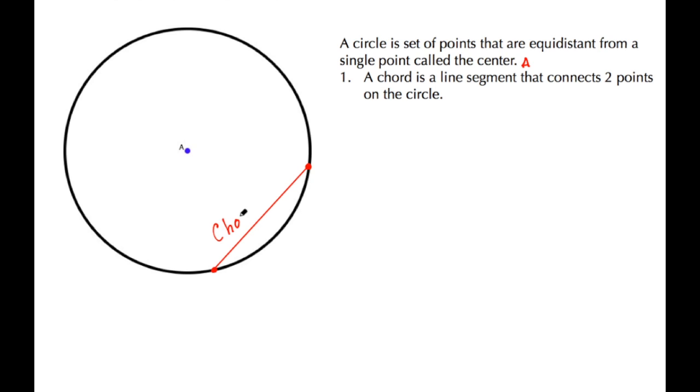We have another type of chord called a diameter. A diameter is a special chord that goes through the center of the circle and it also connects two points on the circle.